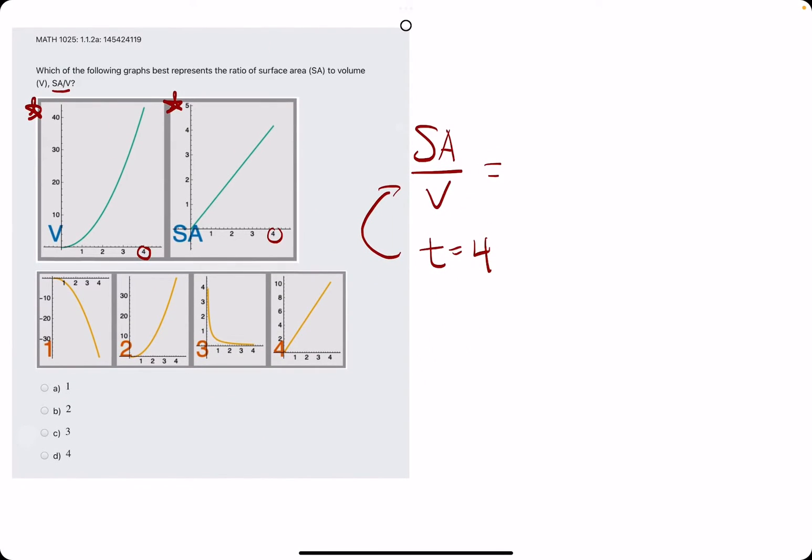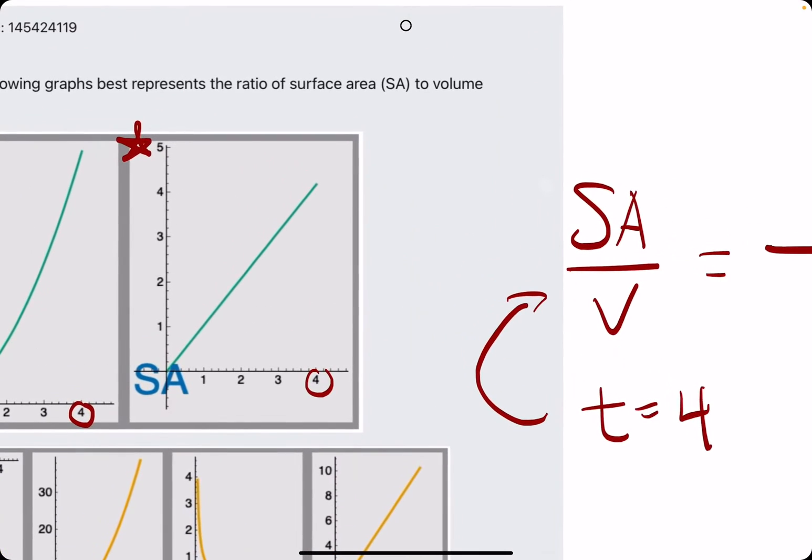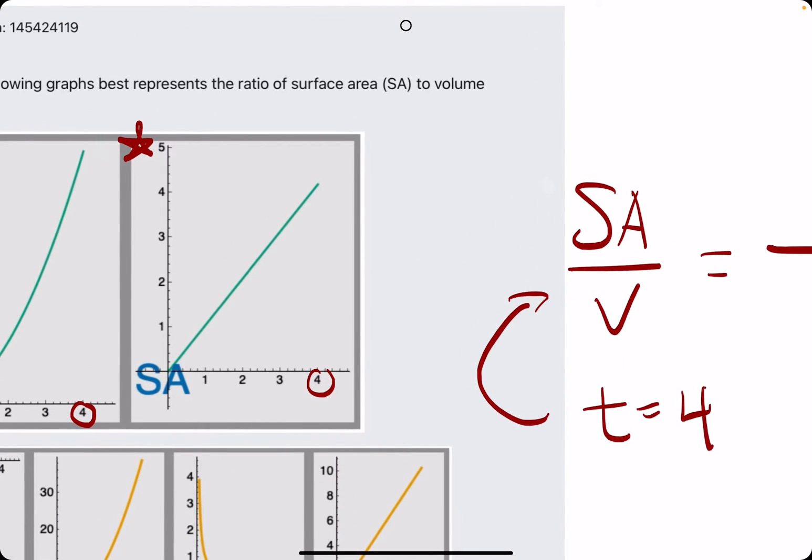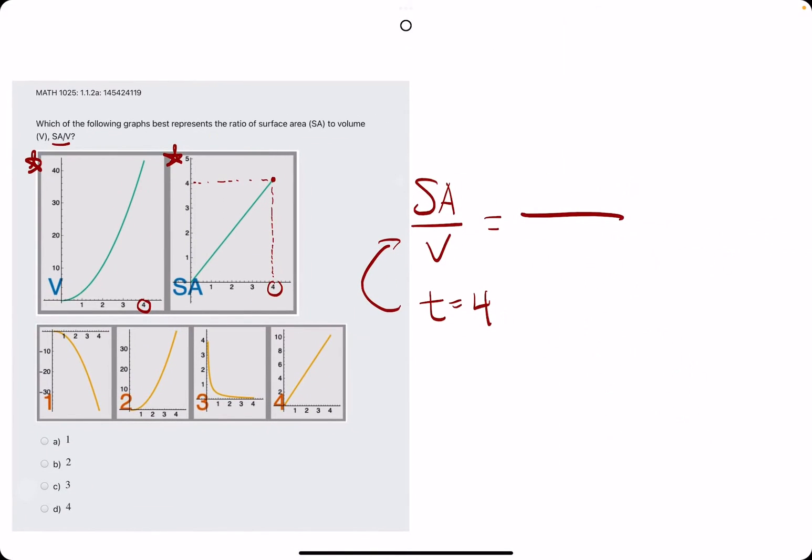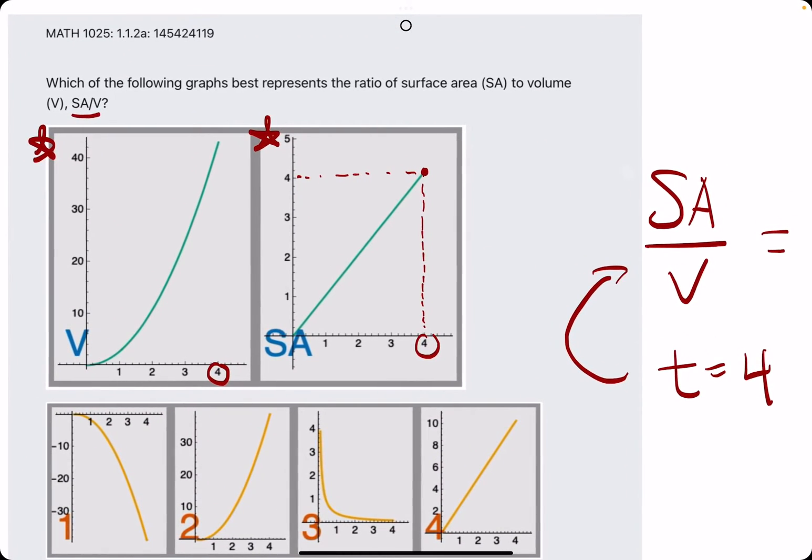surface area over volume, for which we need the surface area value at time 4. So if we go up on the surface area graph and we get that, that's approximately a Y value or a surface area value of 4.